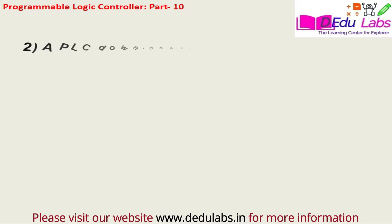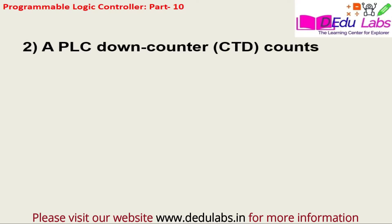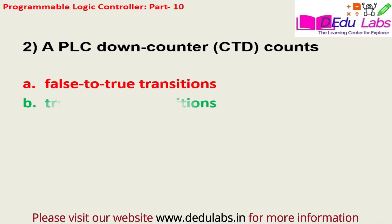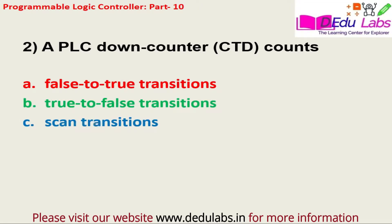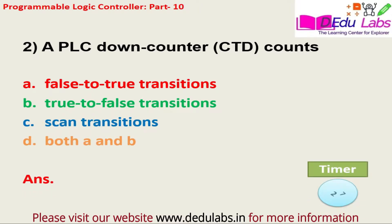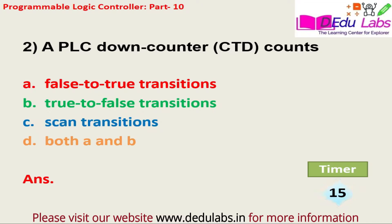Question number two: A PLC down counter CTD counts — option A, false to true transition; option B, true to false transition; option C, scan transition; option D, both A and B. The answer is option A, that is false to true transition.